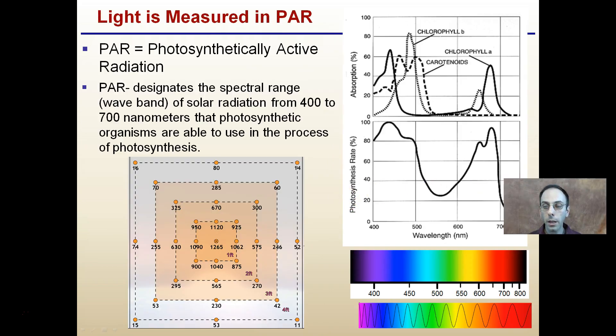Now light's measured in something called PAR, P-A-R, photosynthetically active radiation. It's designated for the spectral range or wave band of solar radiation from 400 to 700 nanometers that photosynthetic organisms are able to use in the process of photosynthesis. Now this 400 to 700 nanometers refers to specific wavelengths. The 400 you can see here versus the 700 and 800. And we notice on our graph over here that the wavelengths are not all used by the same pigments in plants. See our chlorophyll B, chlorophyll A, carotenoids are all using different wavelengths. This is helping the plant be able to use a greater portion of this spectrum.